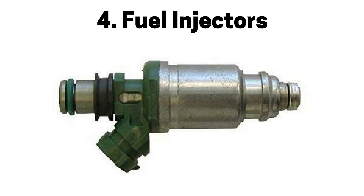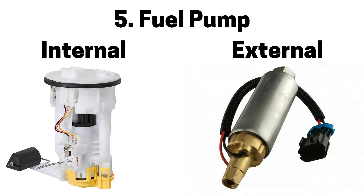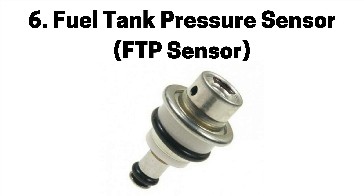Number four is a faulty fuel injector becoming dirty and clogged, developing internal mechanical or electrical issues, not providing enough fuel to the engine, causing a lean air fuel mixture, engine misfire, and a check engine light. Number five is a faulty fuel pump, not providing enough fuel to the engine, causing a lean air fuel mixture, engine misfire, and a check engine light. Fuel injection pumps are located inside the fuel tank, whereas carbureted fuel pumps are located outside the fuel tank. Number six is a faulty fuel tank pressure sensor, also referred to as a FTP sensor, not providing enough fuel to the engine, causing a lean air fuel mixture, engine misfire, and a check engine light.